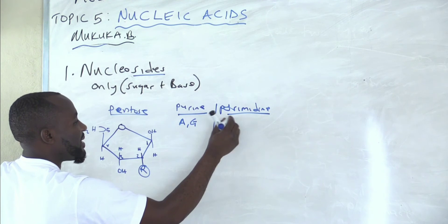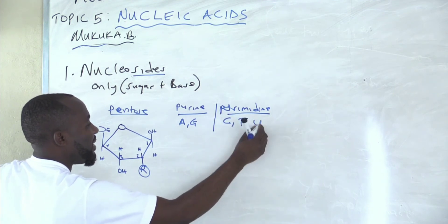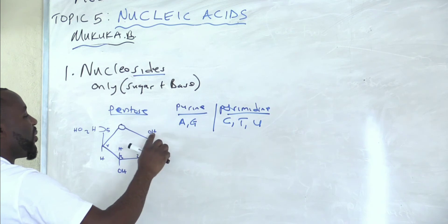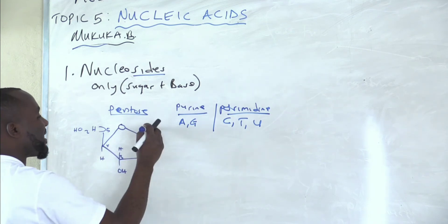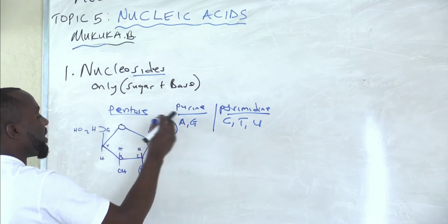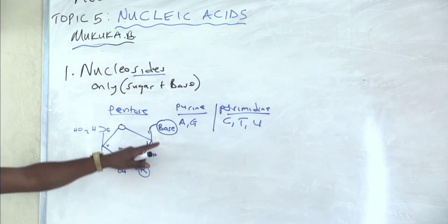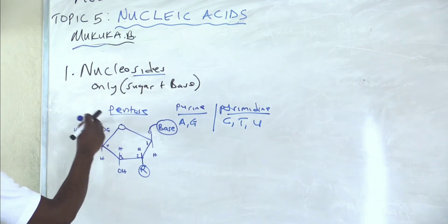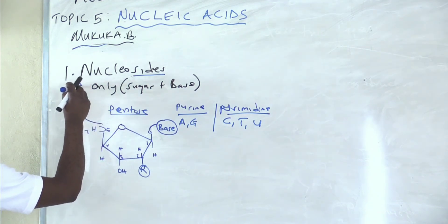So when you have the bases like this, any of the bases, when it comes, what it does is that that hydrogen is lost and the base attaches there. So here, write base. The moment you attach a base on carbon number one to this pentose sugar, the structure you have formed is what we call a nucleoside.